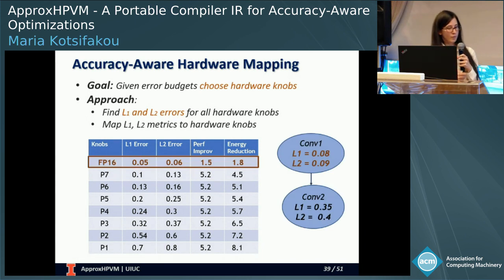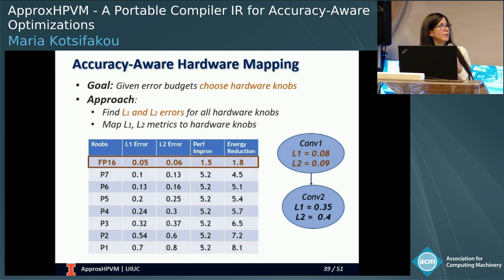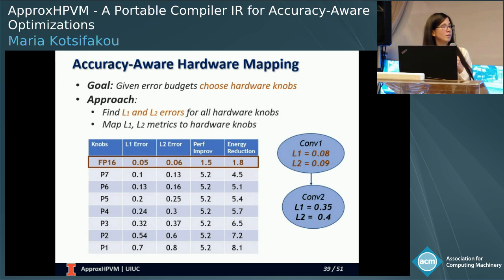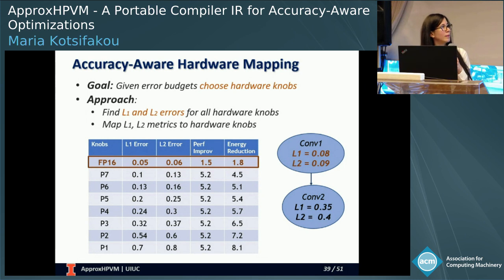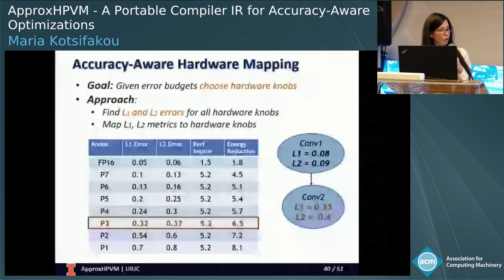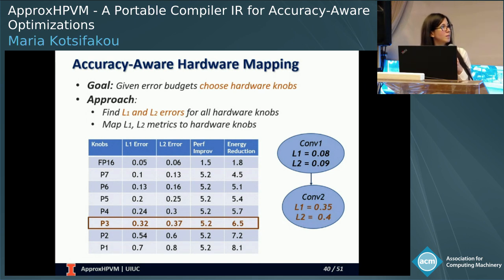Then, for every tensor operation, we map it to a particular knob by selecting the knob that maximizes the performance and energy benefit while respecting the error budget. For example, looking at a convolution operation with a given error budget, the only knob that can respect this budget is one specific option — every other knob introduces higher error. For another convolution operation, there may be multiple knobs from FP16 all the way down to P3, and we select the one that respects the error budget while maximizing performance and energy benefits.